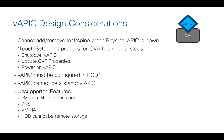You cannot use VAPICs as a standby APIC — this is for reasons of performance and scale. There are a few unsupported features: we don't support vMotion while in operation. You can shut it down and move it, but we don't do live vMotion, and that's not a big deal because you've got three APICs for redundancy anyway. We also don't support DRS or VMware HA, and the hard drive cannot be on remote storage. In a lab environment you could probably get away with remote storage if performance is sufficient, but in production it must be a local hard drive on the host where the VAPIC is deployed.